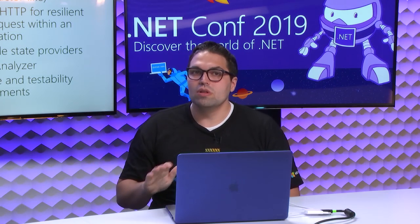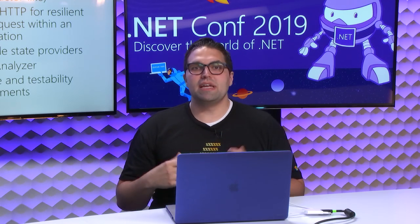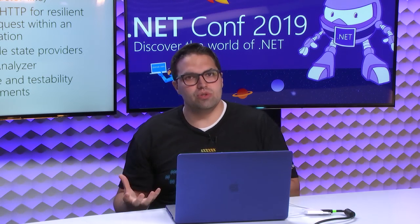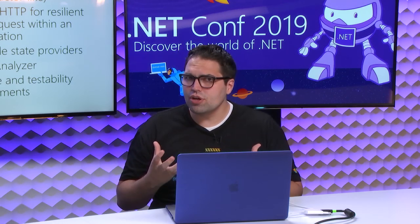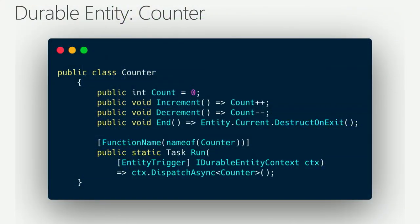Let's spend the next few minutes diving into durable entities. What is a durable entity? Traditionally you think of functions as stateless and short-lived. These are stateful functions that can be long-running in their state. Let's take a very simple example — a counter. Imagine I'm creating the next Fitbit or Apple Watch. Everyone gets a device and I want to track the number of steps someone has taken. I really need some state for each user that's a counter.